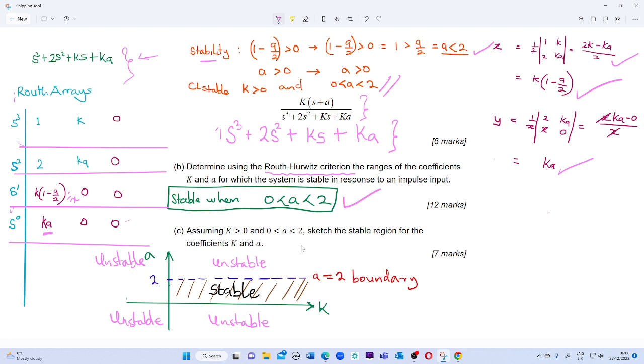Therefore, by plotting and sketching the stable region for the whole system using the Routh-Hurwitz criterion, we have this particular diagram: when k is 0, a is 2. So therefore, all the region under the boundary level a equals 2 is stable, and outside are unstable.